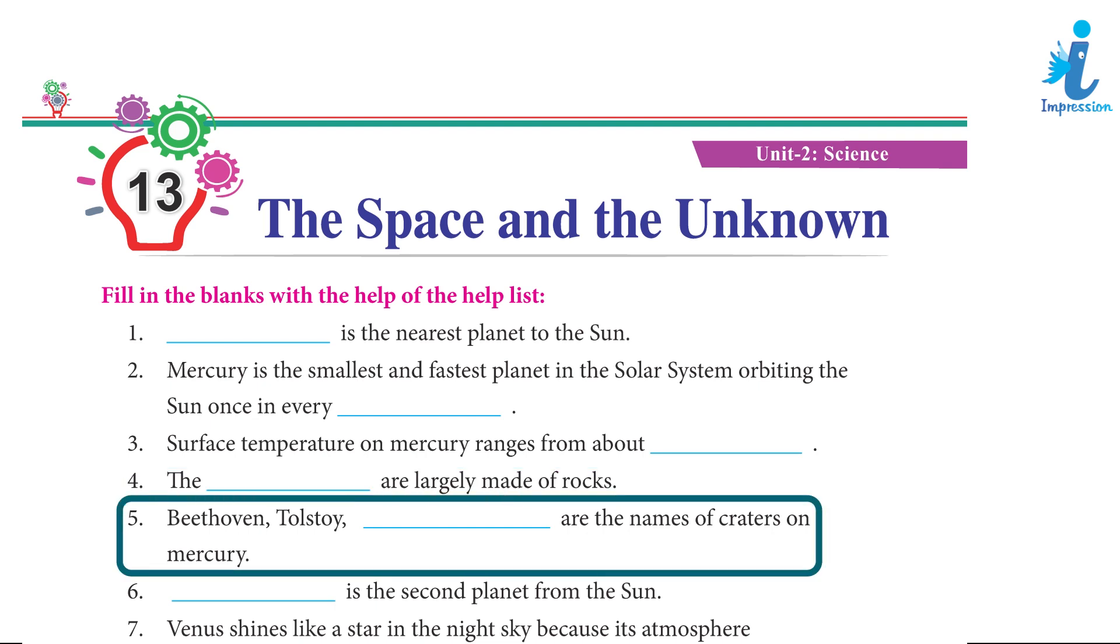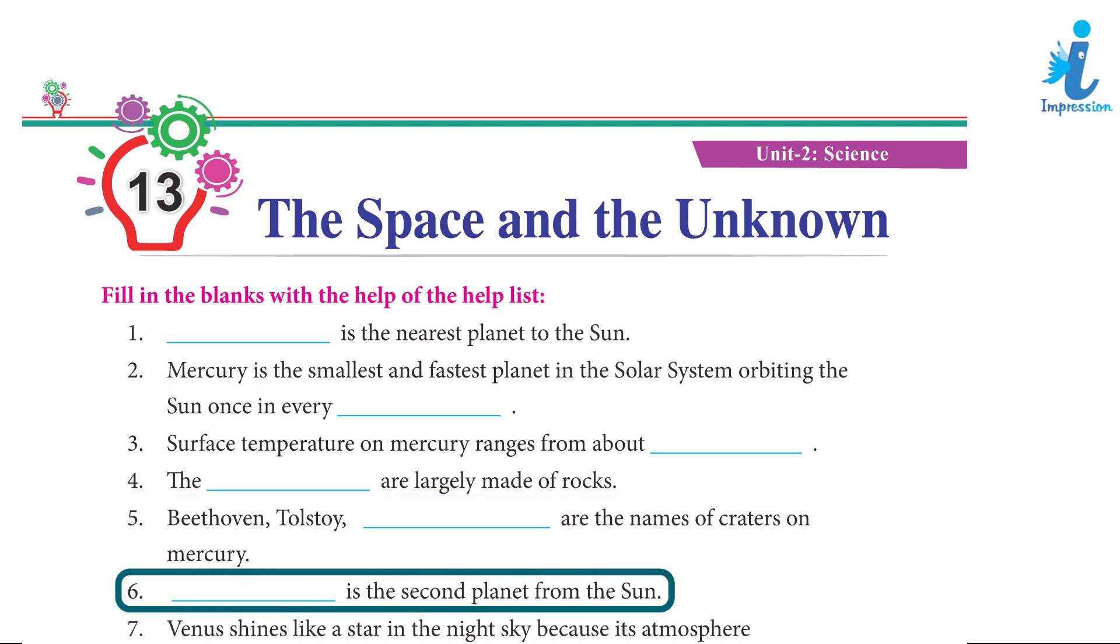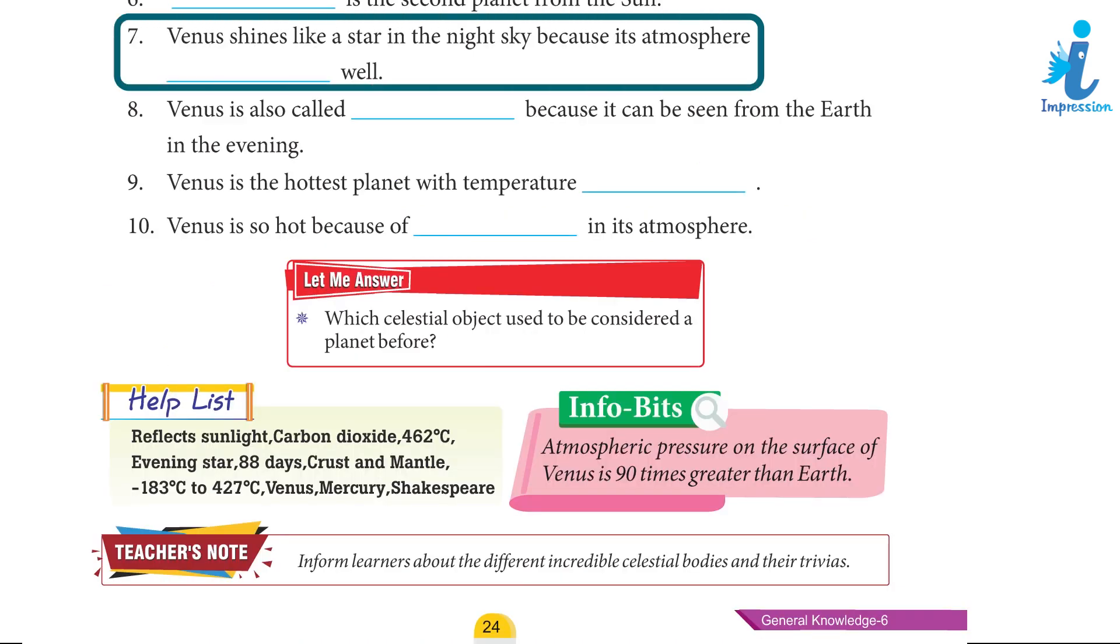5. Beethoven, Tolstoy, Shakespeare are the names of craters on Mercury. 6. Venus is the second planet from the Sun. 7. Venus shines like a star in the night sky because its atmosphere reflects sunlight well.